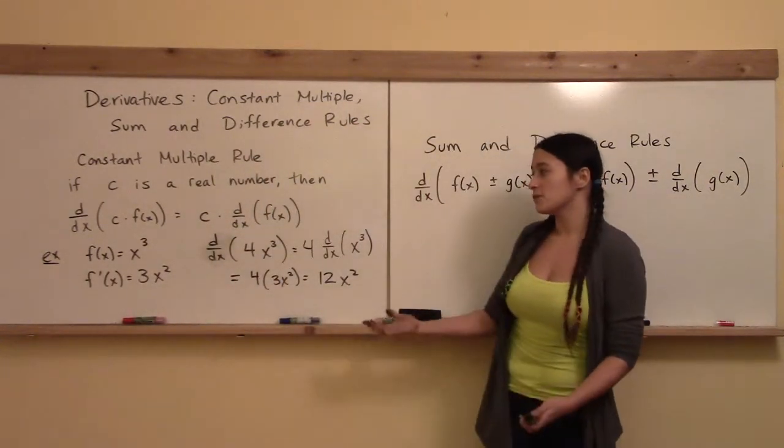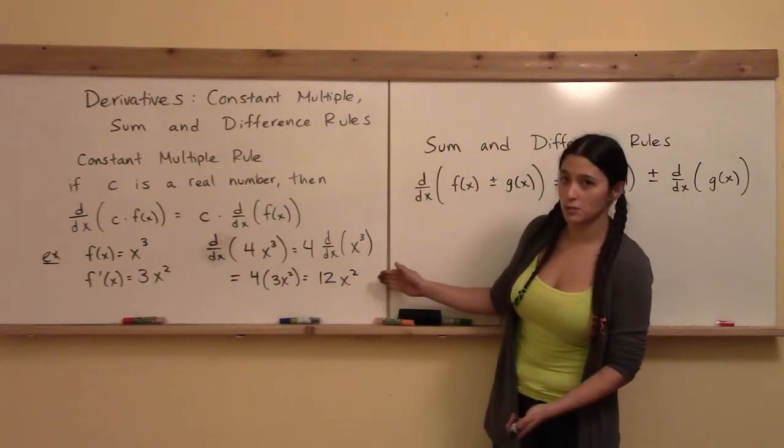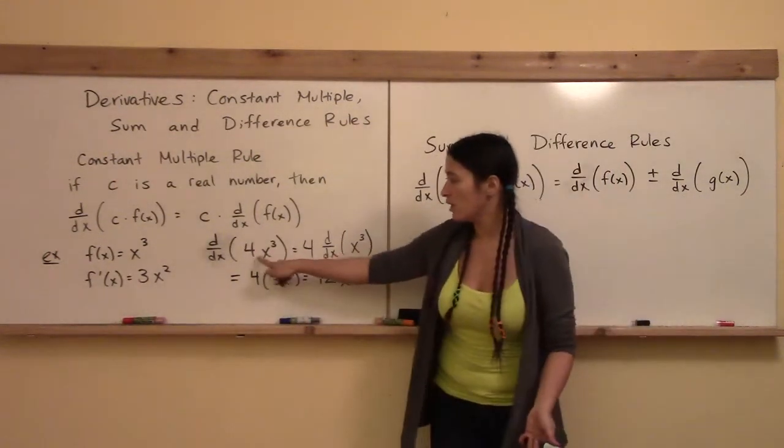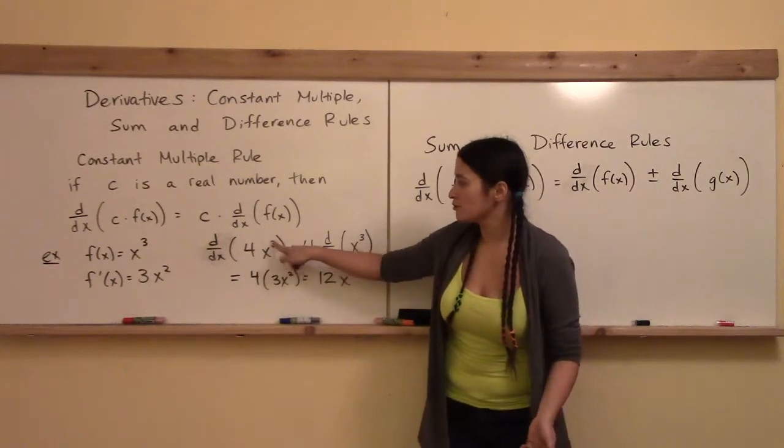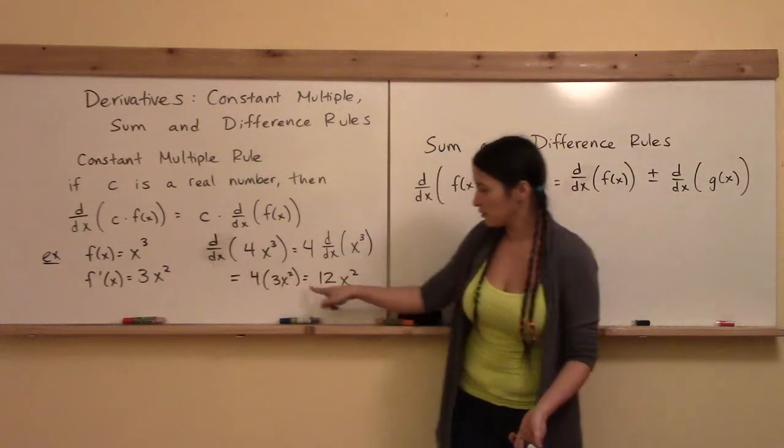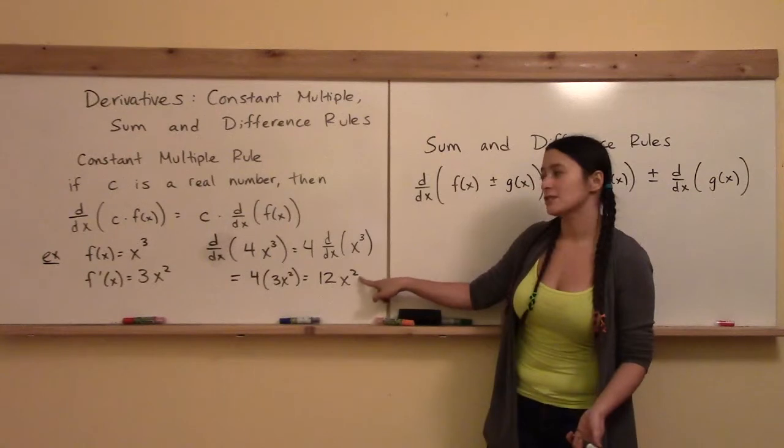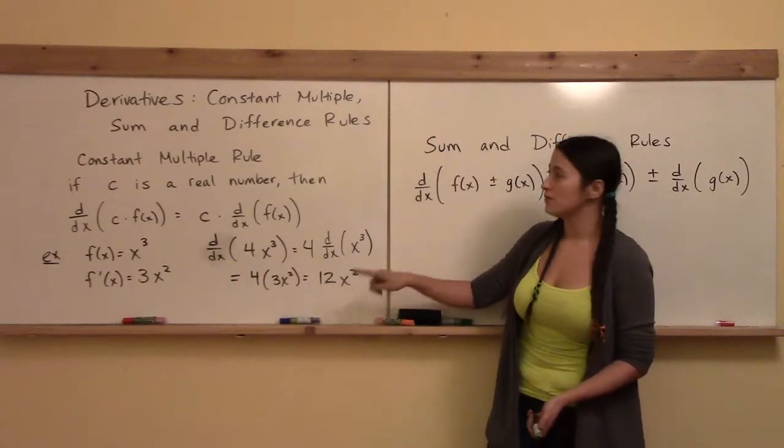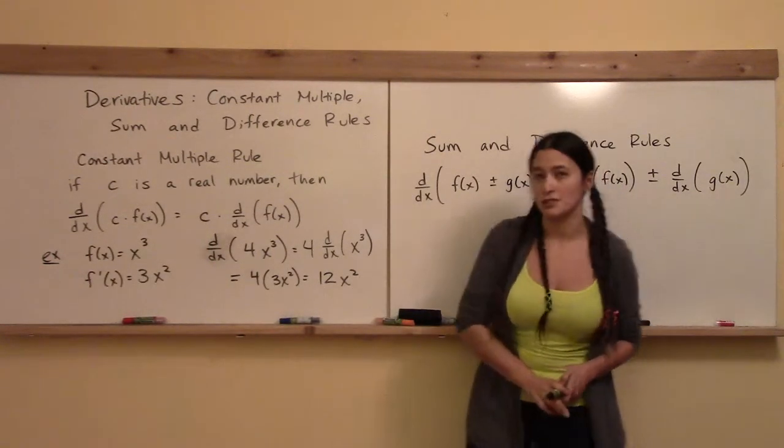Once you get comfortable with this, you don't actually have to go through each one of these steps. You can just bring the 3 down and multiply it by 4 to get 12, and then subtract 1 from the power. It's very useful when taking the derivative of polynomials.